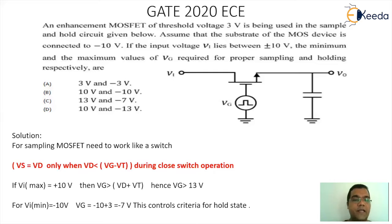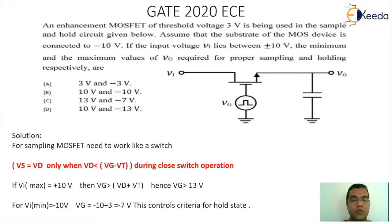So if I take the input as plus 10V, then the condition will be VG greater than VD plus VT. So you get VG equals VD plus VT. We are giving the input at the drain point, so the input is going to be plus 10. The threshold is going to be 3. So VG will have a condition of 10 plus 3, which will be 13 volts.